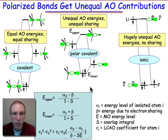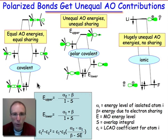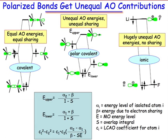Now let's study the LCAO model when atoms of two different types come together. Here are three energy interaction diagrams for different cases. The first case: the two atoms are identical — two carbon atoms come together. They both have exactly the same energy, so both atomic orbitals contribute equally to the bond. This is a perfectly covalent bond; it's non-polar.